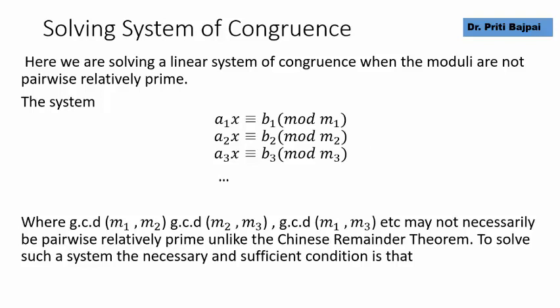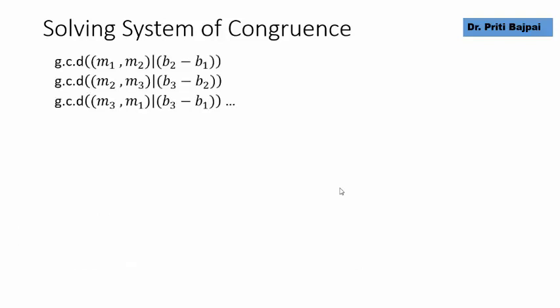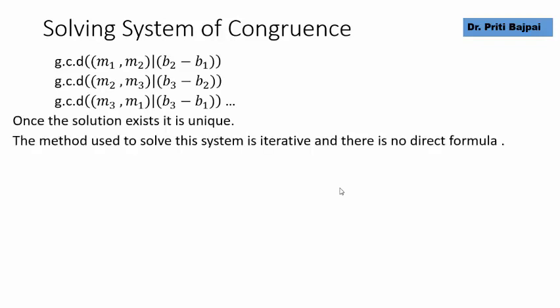So, how do we solve such a system, and when is such a system solvable? Such a system is solvable if and only if, taking the moduli in pairs: GCD(M1, M2) should divide B2 minus B1; GCD(M2, M3) should divide B3 minus B2; and so on for all pairs. If that holds, the system is solvable and has a unique solution, and we solve it using an iterative method — there is no direct formula.